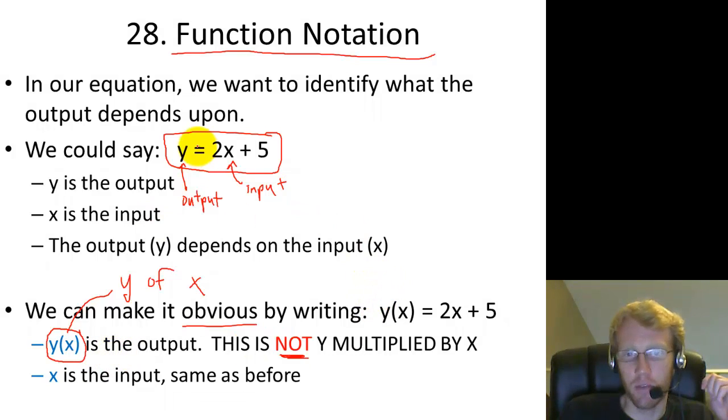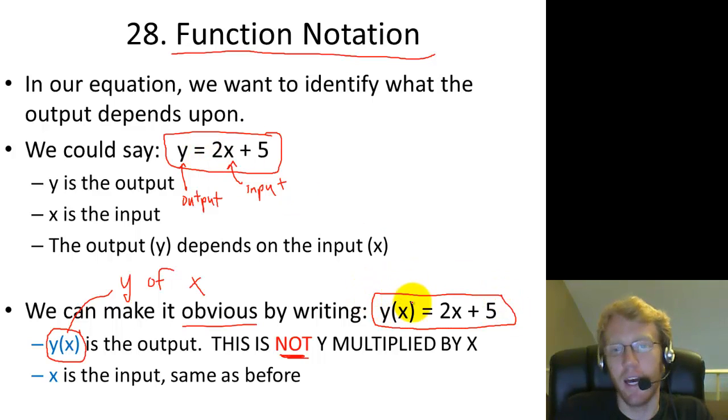So instead of just writing y equals 2x plus 5 it's very simple. All we do is instead of writing y we write y parentheses x. And what that's doing is it's making it explicit and obvious that the output value y, still the output, it's just telling you that it depends on x.